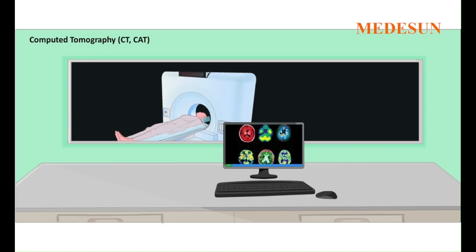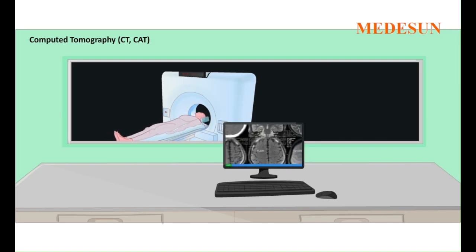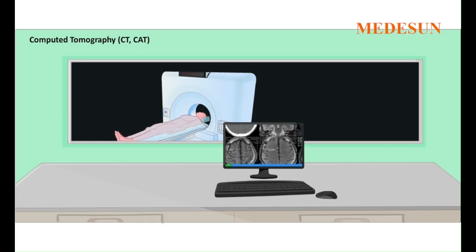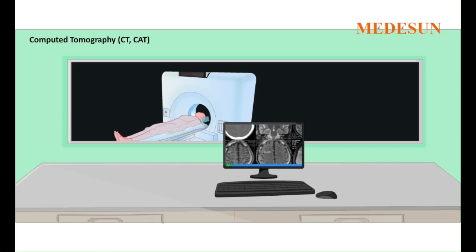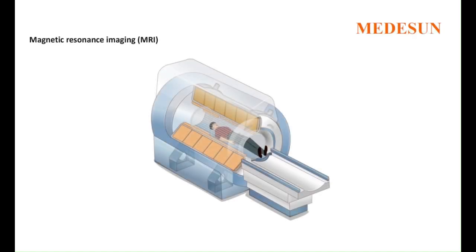In effect, a picture is created by the computer of a thin slice of the patient's body. The couch is then moved slightly further through the ring to get a picture of the next section of the body. In this way, several cross-sectional pictures or slices of the part of the body being investigated are recorded by the computer.